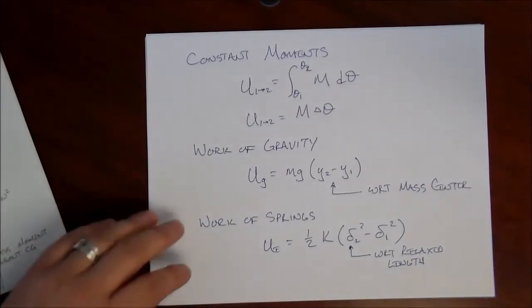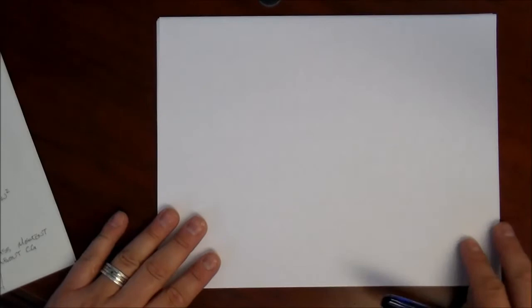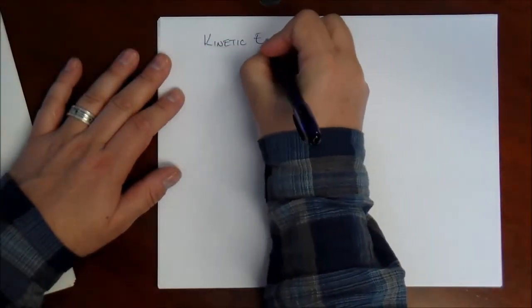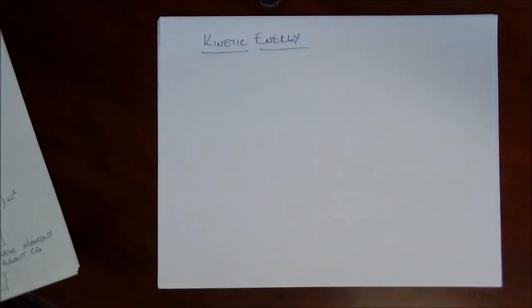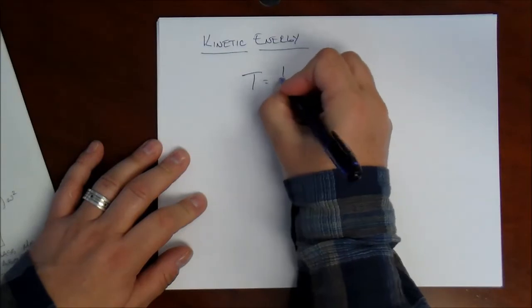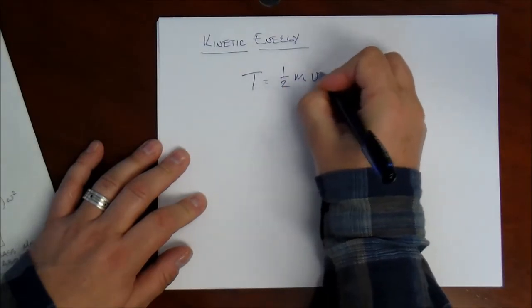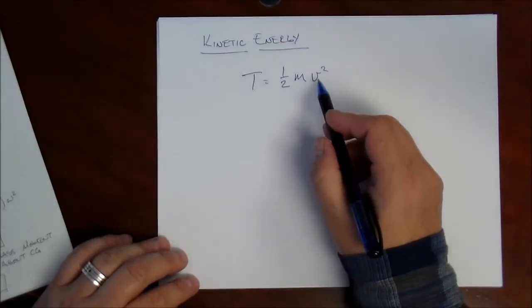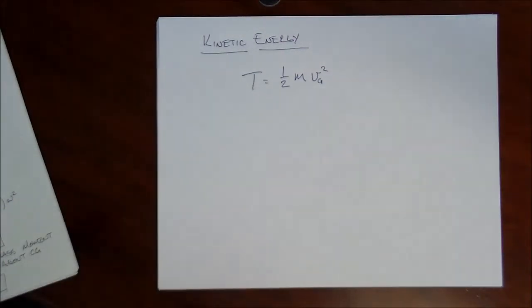And now, a little bit about the kinetic energy expression in the principal working energy for rigid bodies. It's really not a big departure from what we saw in the past. Essentially, the kinetic energy for a rigid body is one-half mv squared. But now, we're talking about the translational velocity of the mass center. So, I'll subscript that with a g. So that's the translational kinetic energy, but also our rigid bodies can rotate.